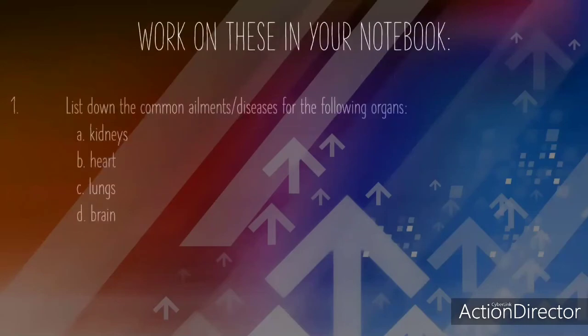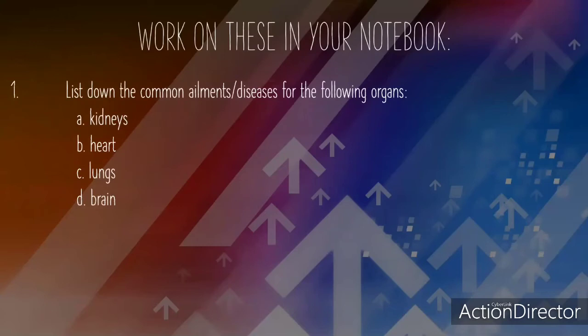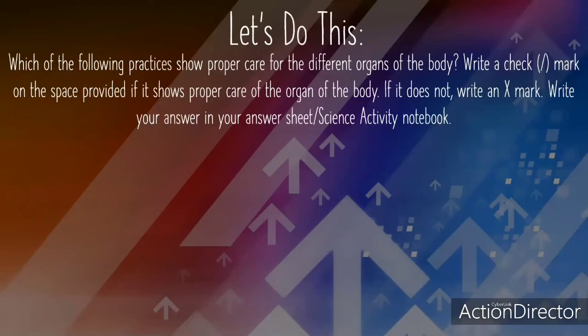Let's work on these in your notebook. List the common ailments or diseases for the given organs. Write down 10 ways of taking care of our body. You may write your answer in your notebook. Which of the following practices show proper care for the different organs of the body? Write a check mark on the space provided if it shows proper care of the organ, or write an X mark if it does not.